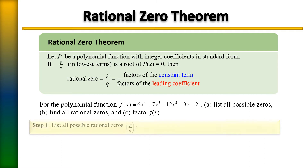So we have 2 over 6, that would be your P over Q. Next we want to find the factors of 2. Since 2 is a prime number, the only factors are 1 and 2. For the denominator, 6 is a composite number so it has more factors: 1 times 6, and also 2 times 3. So the factors of 6 are 1, 2, 3, and 6.